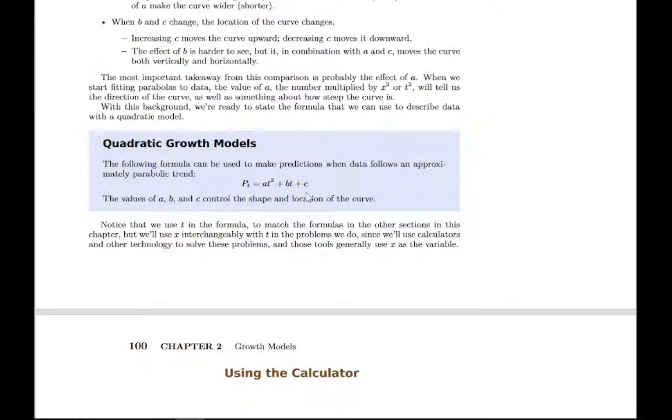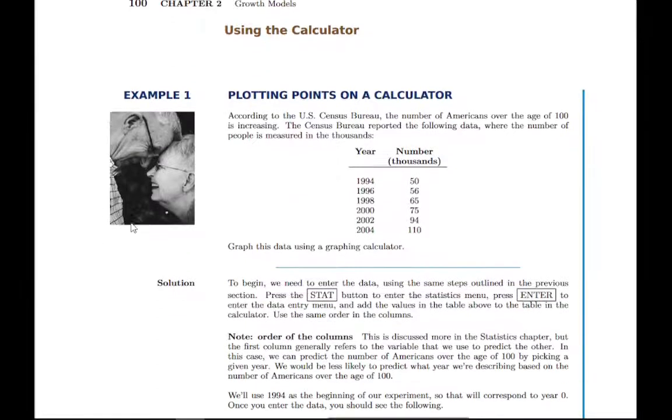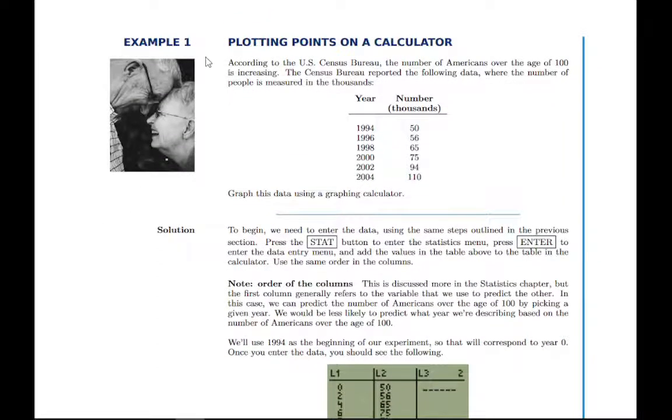And so when we use our calculator, for instance, we'll find values for a, b, and c, and then we'll just fill them in to fit that model. And you'll see that in the examples. So there's one example here of just using your calculator to plot points. Of course, you can also use Excel, or Desmos, or anything else like that to plot points. And the goal here is just to observe that curved trend that looks quadratic, and to recognize that.